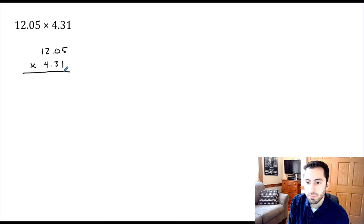So we'll start with the 1. 1 times 5, we get 5, 1 times 0, 1 times 2, and 1 times 1. Moving on to the 3, we'll add in a 0. 3 times 5, we get 15, and we need to carry the 1. 3 times 0 is 0, plus 1. 3 times 2 is 6, and 3 times 1 is 3.